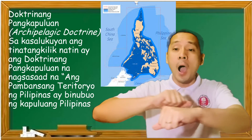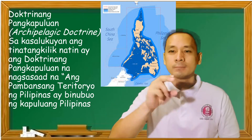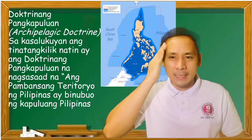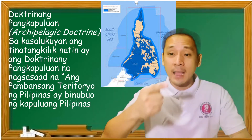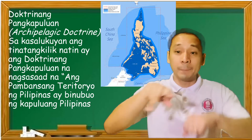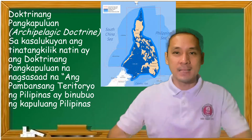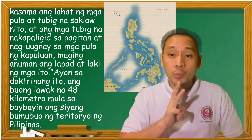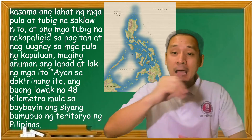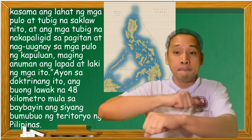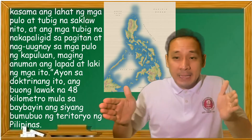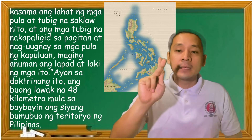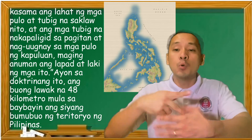Doktrina ng Pangkapuloan o Archipelagic Doctrine. Sa kasalukuyan, ang tinatangkilik natin ay ang doktrinang pangkapuloan na nagsasaad na ang pambansang teritoryo ng Pilipinas ay binubuo ng kapuloang Pilipinas kasama ang lahat ng mga pulo at tubig na saklaw nito, at ang mga tubig na nakapaligid, sa pagitan at nag-uugnay sa mga pulo ng kapuloan, maging anuman ang lapad at laki ng mga ito. Ang buong lawak na 48 kilometro mula sa baybayin ang siyang bumubuo ng teritoryo ng Pilipinas.